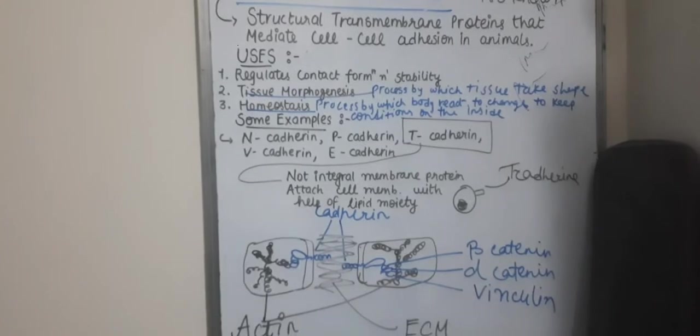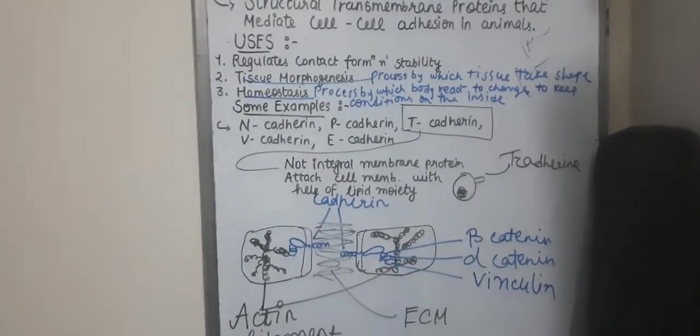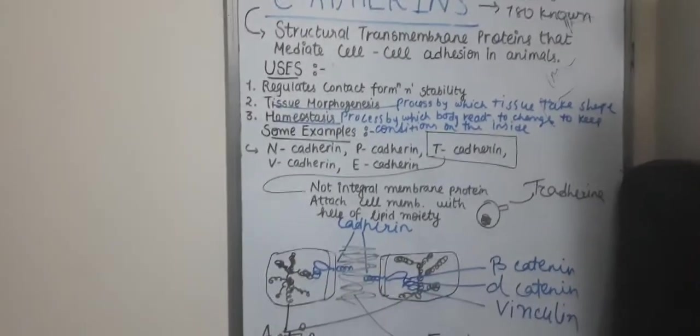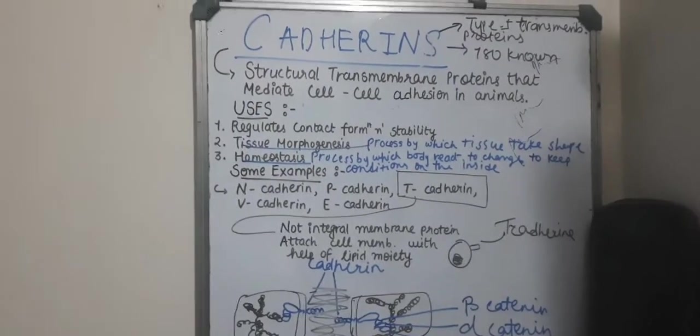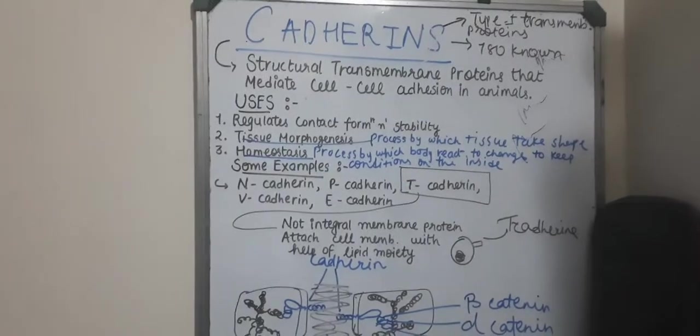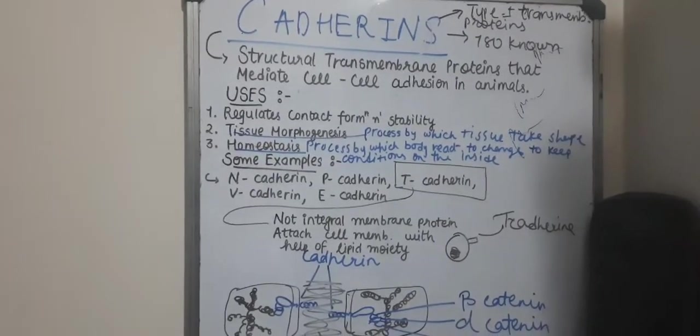Now we will see three of its main uses. First use: they regulate the contact formation and stability, so they maintain the stability and contact formation. Second is tissue morphogenesis.